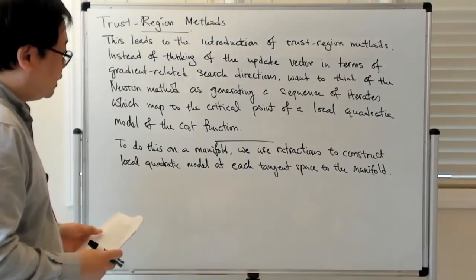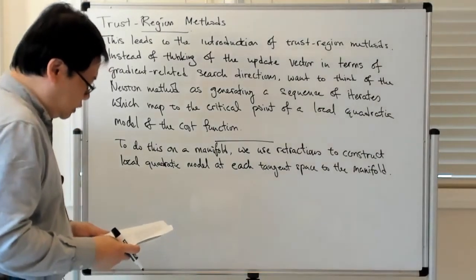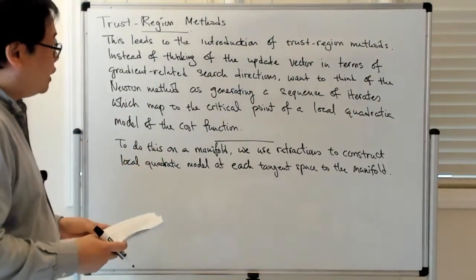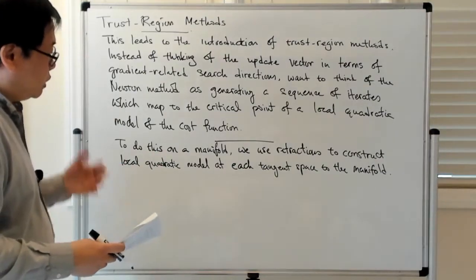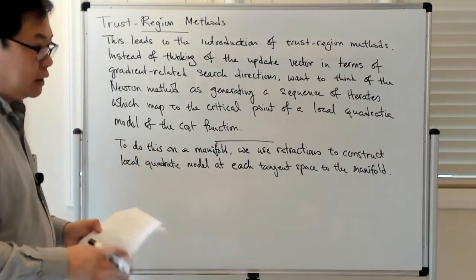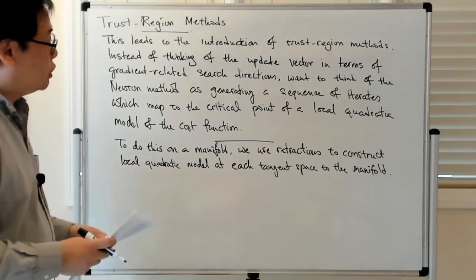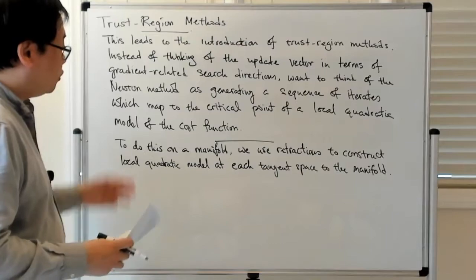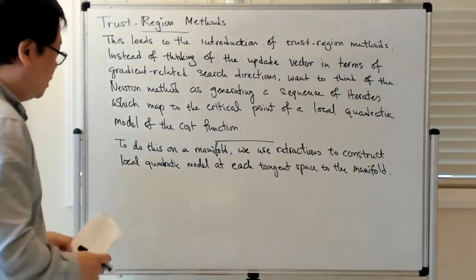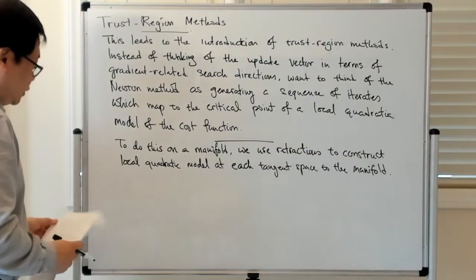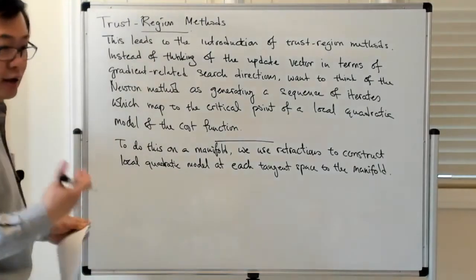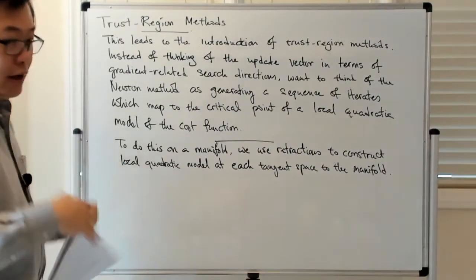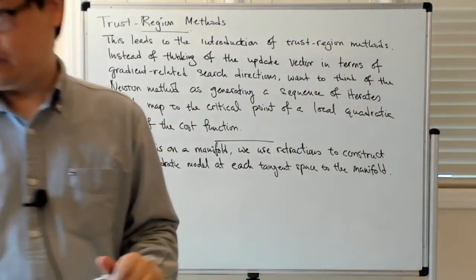What we're going to do is first study local quadratic models in R^n and then in general Euclidean spaces. With that general setting, we'll talk about how to do this on Riemannian manifolds via an appropriate choice of retraction. So the next steps are to study these local quadratic models, and then we'll talk about quadratic models in a bit.